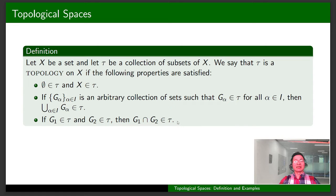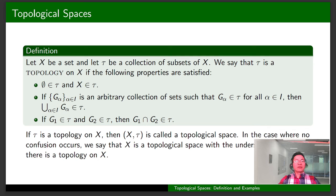And by induction, we can show that if this condition is satisfied, then τ is closed under finite intersection. If τ is a topology on X, then the pair (X, τ) is called a topological space.